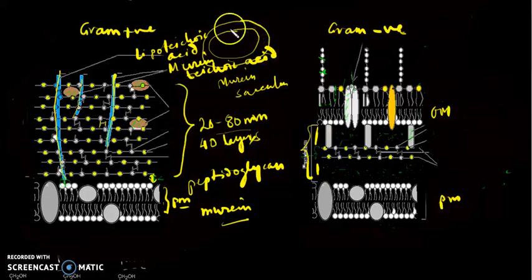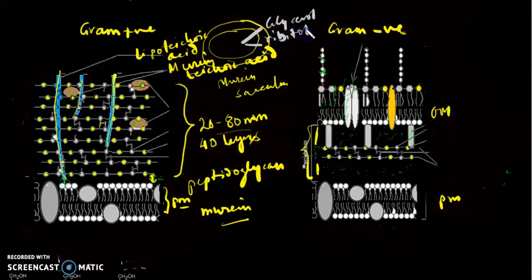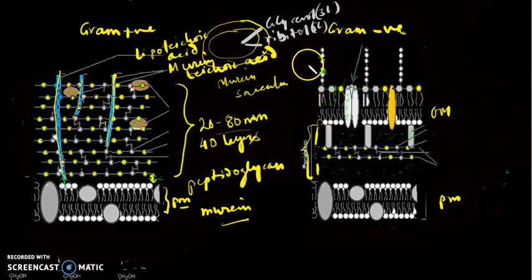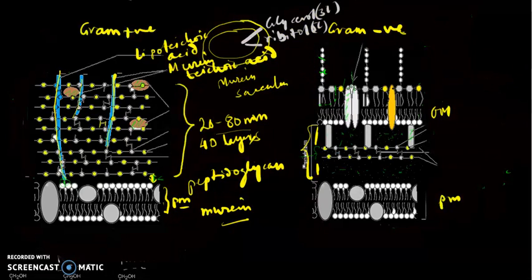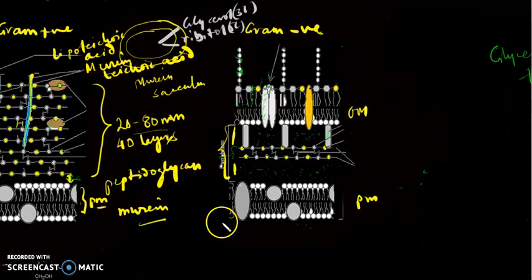Teichoic acids are of two types: they may be glycerol teichoic acid — glycerol-based — or ribitol teichoic acid. Glycerol is a three-carbon chain and ribitol is a five-carbon chain. They are present in about 30 to 40 units, linked by phosphate moieties just like the sugar-phosphate backbone of nucleic acids. This is the structure of the gram positive cell wall.